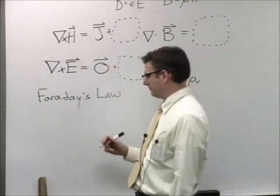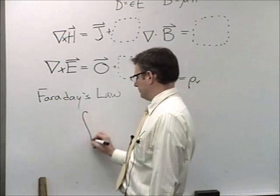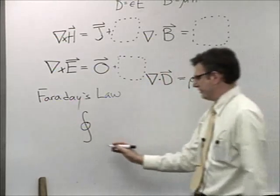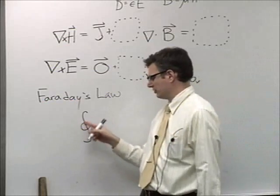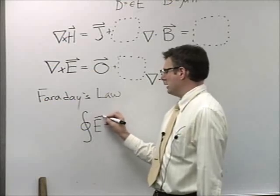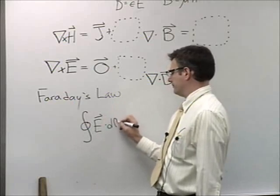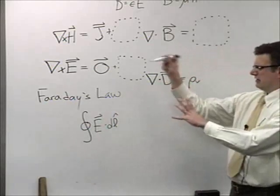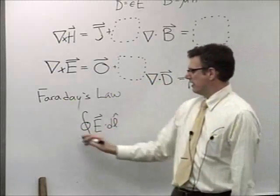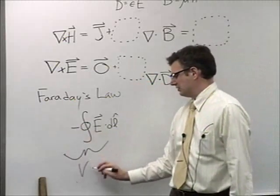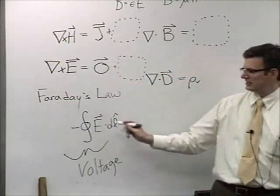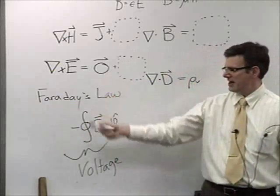Faraday's Law says that the path integral around a closed path L, which I had to denote as a little circle just to denote that it's closed, if we add up E along that path integral, counting up all the contributions that are collinear with that path, and we put a minus sign in front of it, that's what voltage is. Voltage is always measured between two points. In this case, we're actually going around and going back to the place that we started from.